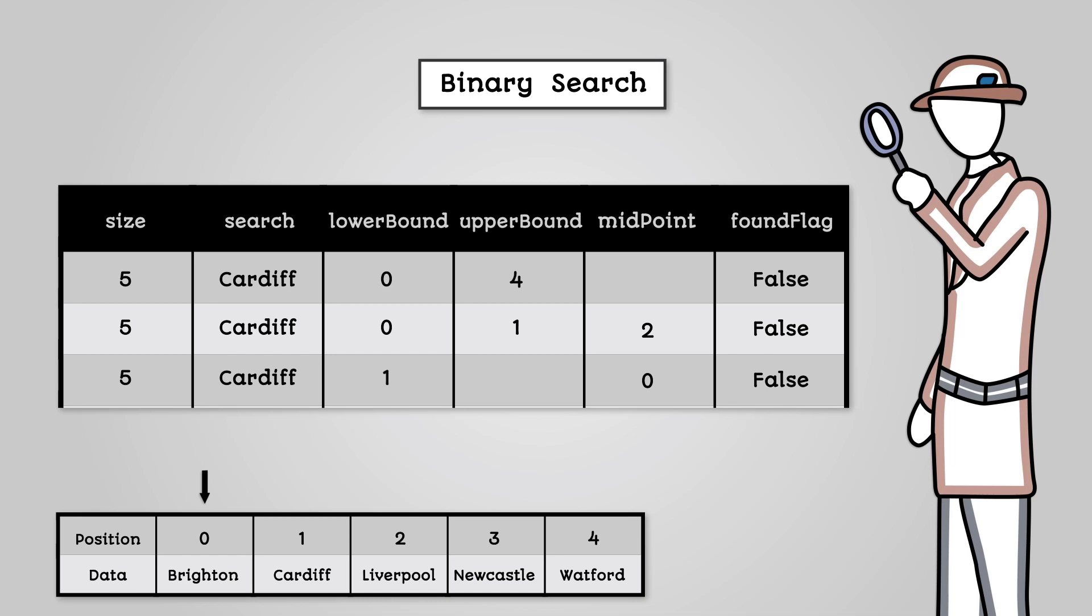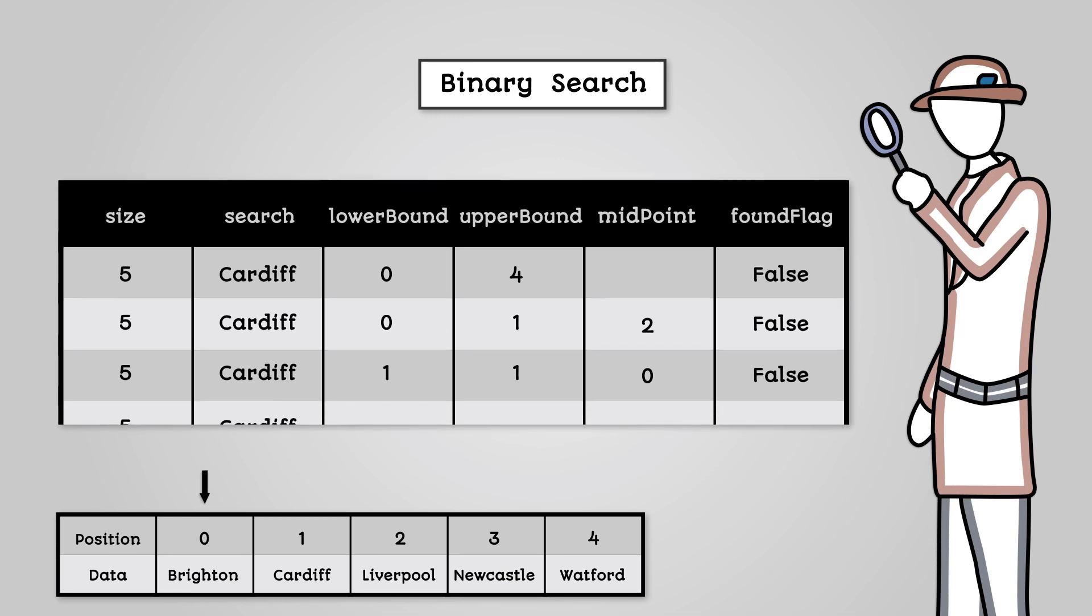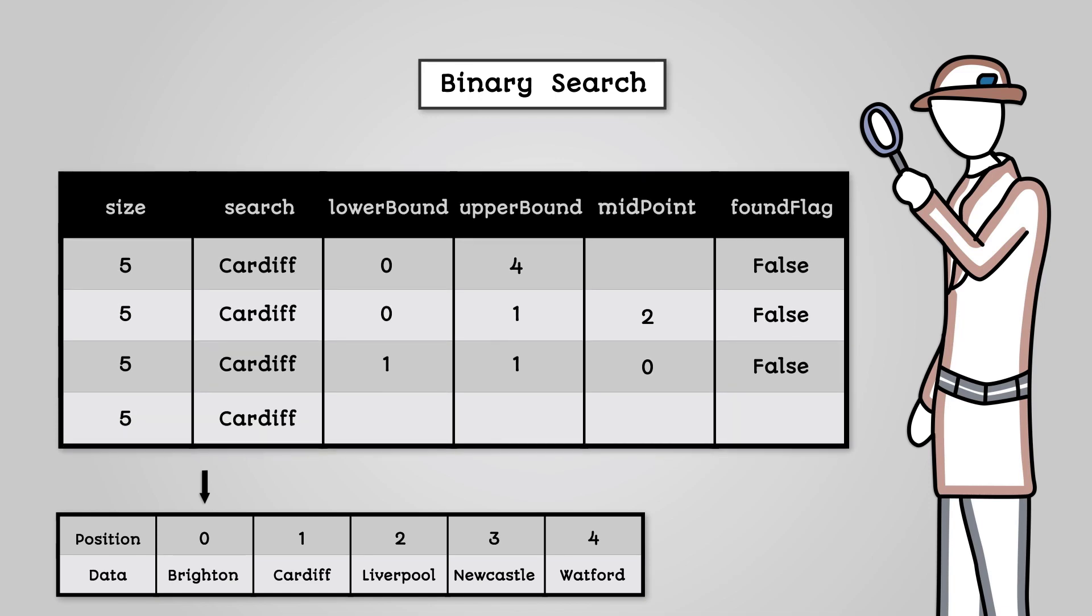We do finally do a check if Brighton is above Cardiff but we already know it isn't so nothing happens. The next time through the loop we calculate the midpoint. This will give us 1. We can then check if the list value at index 1 is equal to Cardiff. It is so we can now flag that it's been found.